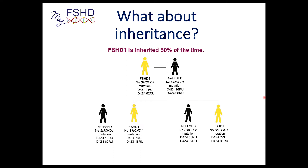What about inheritance? FSHD1 is passed on 50% of the time. If you have an FSHD1 mutation and there's no SMCHD1 mutation in your partner, statistically half the children would be FSHD1 — they get the contracted repeat unit.